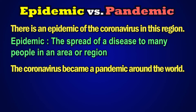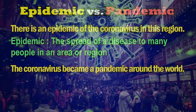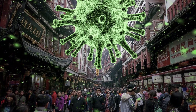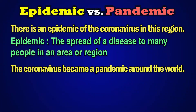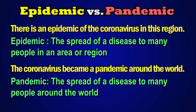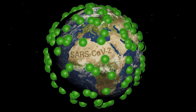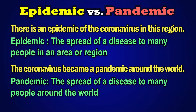Epidemic is a spread of a disease to many people in an area or region. Pandemic is a spread of a disease to many people around the world. Epidemic is in a smaller area, but pandemic is in a global area.